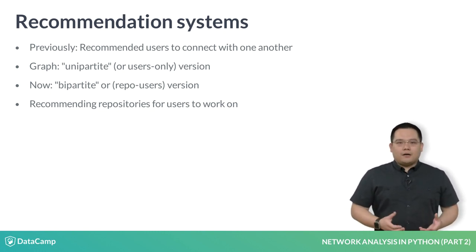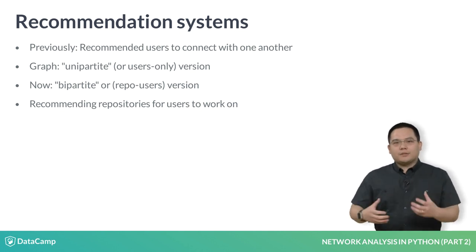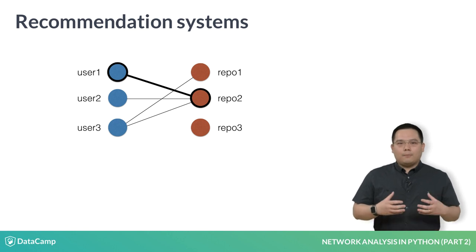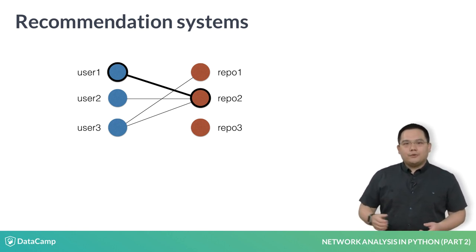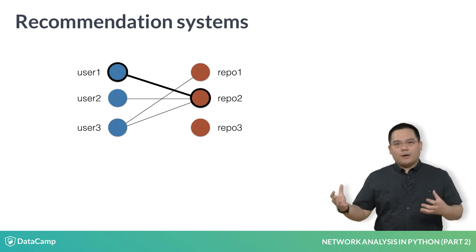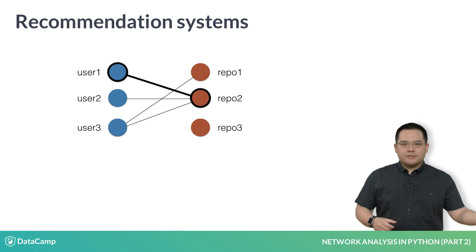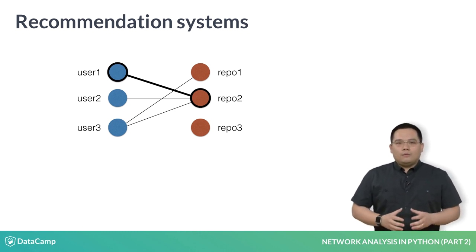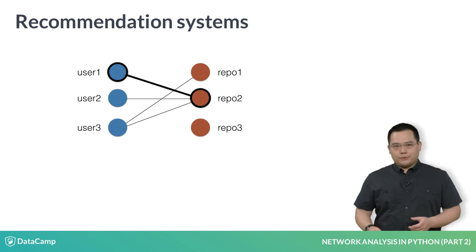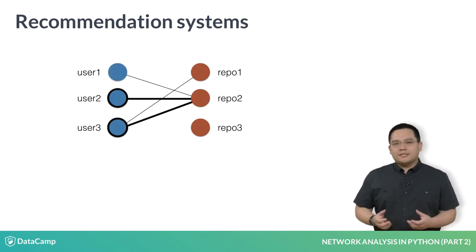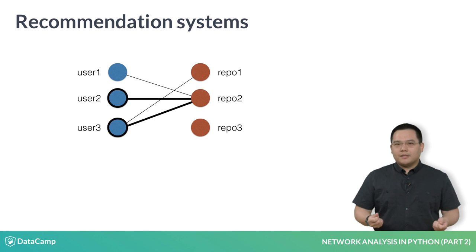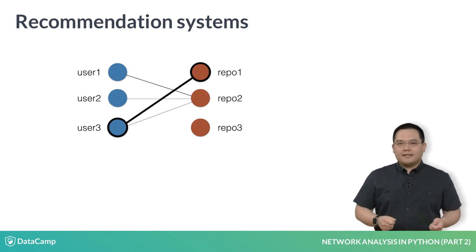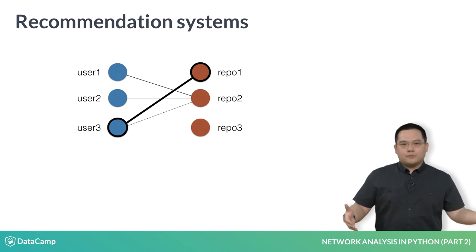The concept is founded on set overlaps between highly similar nodes on one partition. Let's say we have a bipartite graph as shown here. User 1 is connected to repo 2, and we want to recommend repositories that user 1 might be interested in working on. What we can do is ask which other users are connected to repo 2 other than user 1, which in this case are user 2 and user 3. User 3 also has another repository, repo 1, that it's connected to. In this case, we may want to recommend repo 1 to user 1 to contribute to.